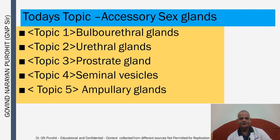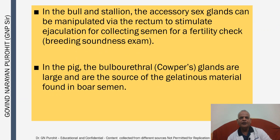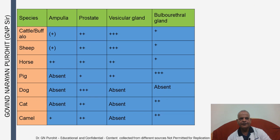In the bull and stallion, the accessory sex glands can be manipulated via the rectum to stimulate ejaculation for collecting semen for a fertility check — the breeding soundness evaluation. In the pig, the Bulbourethral Glands or Cowper's Glands are large and are the source of the gelatinous material found in boar semen. In this table you can see which glands are absent in various species: in the pig, the ampulla is absent; in the dog, the ampulla, vesicular glands, and Bulbourethral Glands are absent — dogs only have the prostate gland. In the cat, the ampulla and vesicular gland are absent. In the camel, the seminal vesicles or vesicular glands are absent.